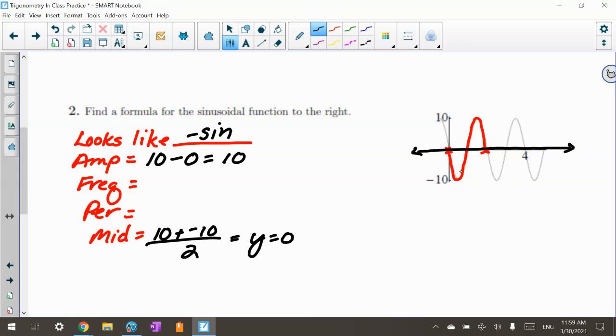My period is how long it takes me to see one curve, and it's going to be half as much as that one, so my period is 2, which equals 2π over my frequency, which is 2π over 2, or the frequency is π.